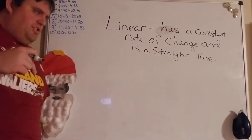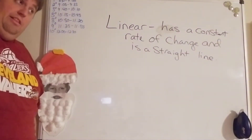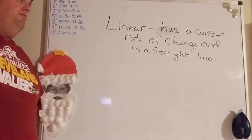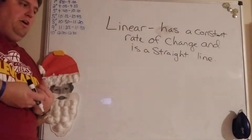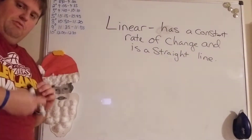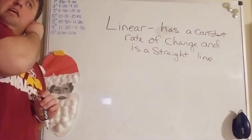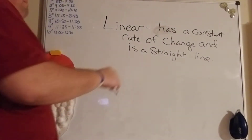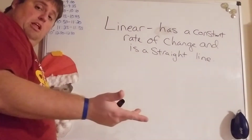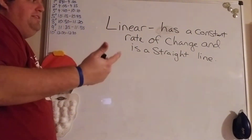So if I'm looking at a graph, anything that is a straight line will be linear. We've been looking at linear functions — anything written in slope-intercept form is linear because it's going to be a straight line. It has a constant rate of change, which we call the slope. The slope tells me how much it rises and how much it runs.